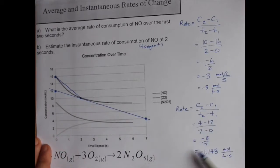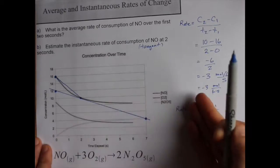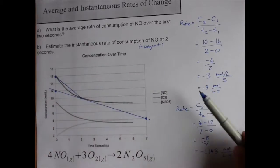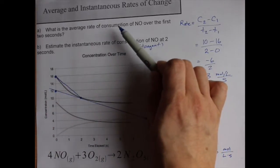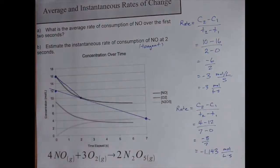You'll notice that these rates are negative because these are consumptions. I have noticed some teachers will say that the rate of consumption is positive 3 moles per liter per second because consumption implies the negative. You'll have to see what your teacher prefers on your own. Cool? Cool.